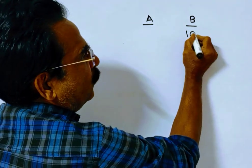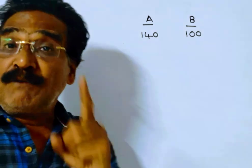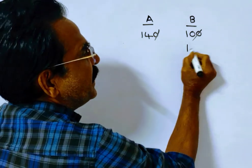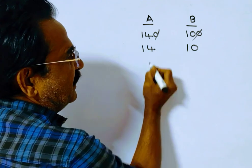If B can do 100 units of work, then A can do 140 units of work. It implies if B can do 10 units of work, A can do 14 units of work.